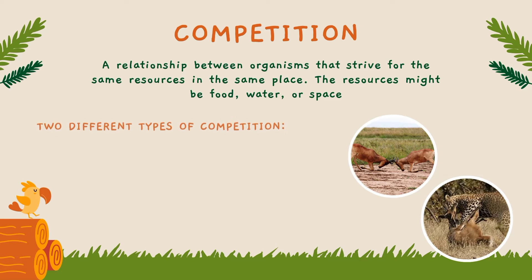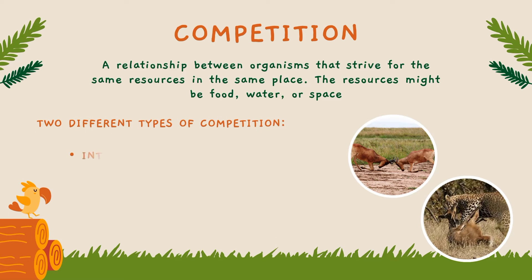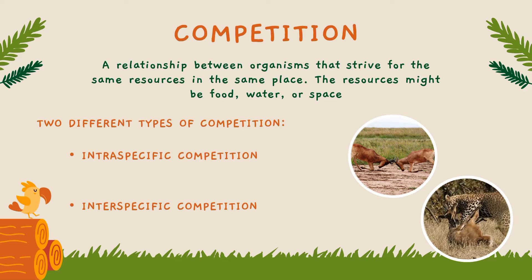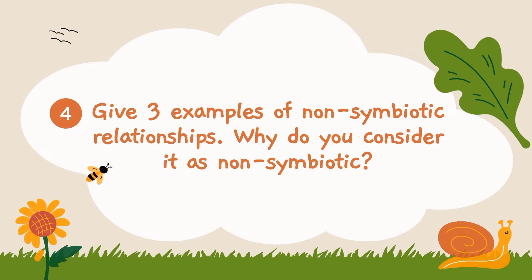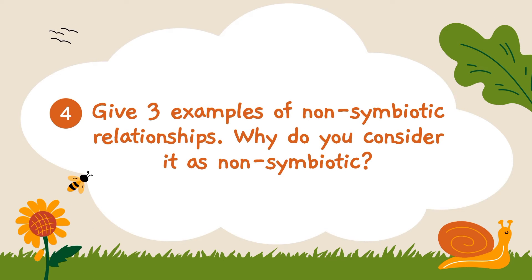There are two different types of competition: intraspecific or interspecific competition. Intraspecific competition occurs between members of the same species. On the other hand, interspecific competition happens between members of different species. Give at least three examples of non-symbiotic relationship and tell us why you consider it as non-symbiotic.